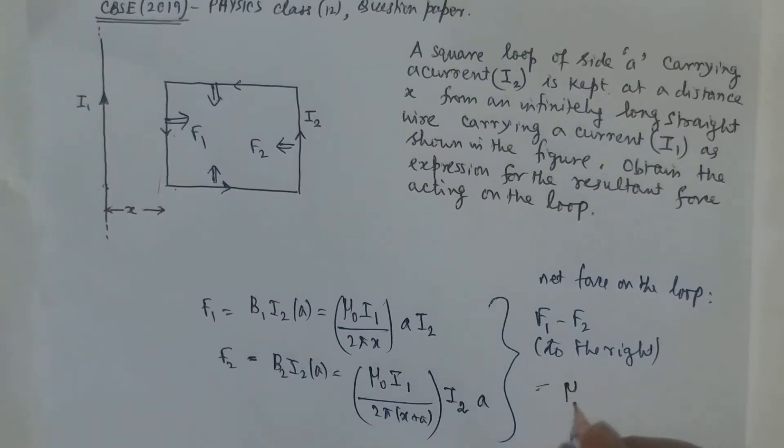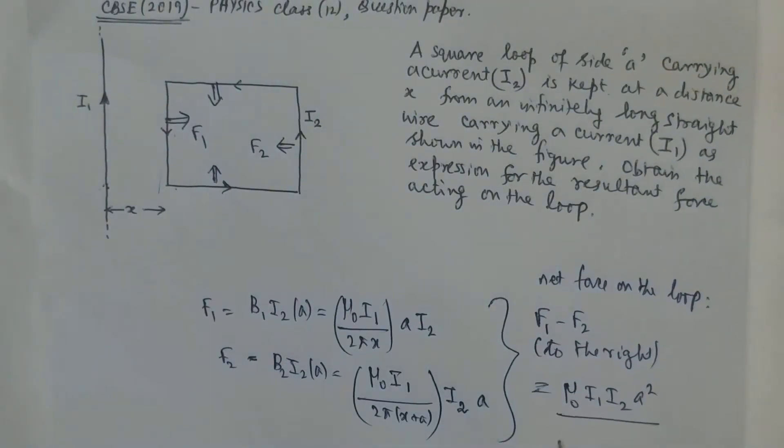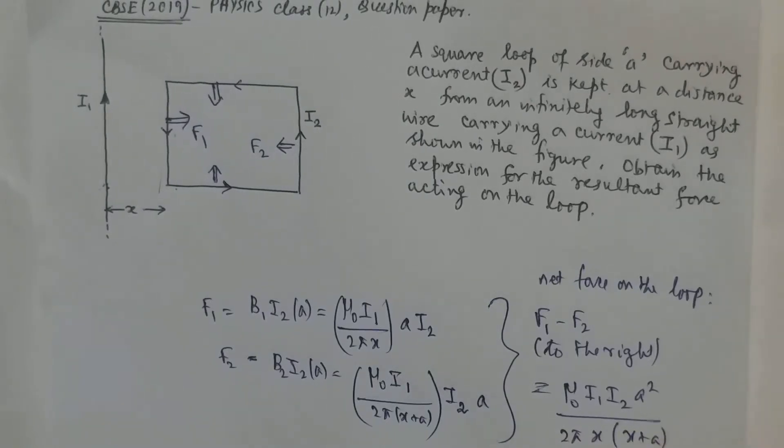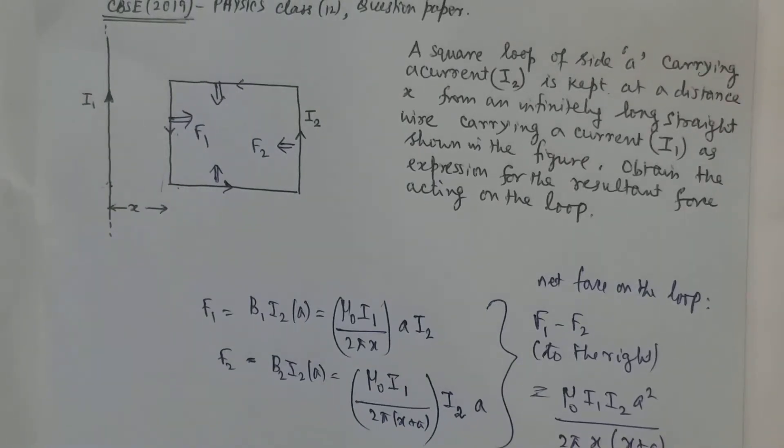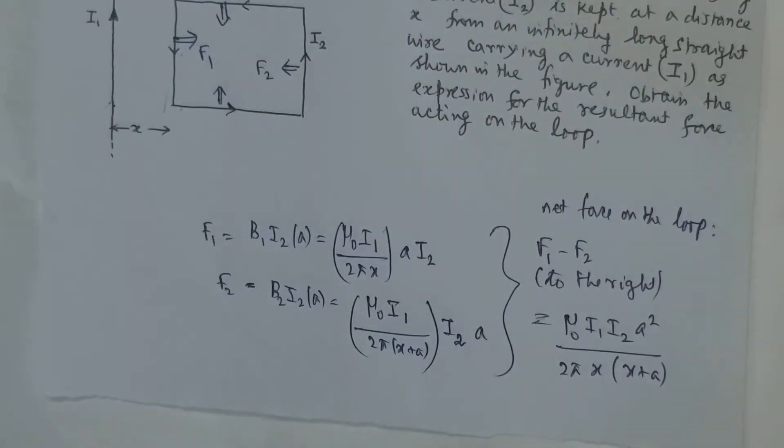Just put the value: you have μ₀I1I2A² divided by 2πx(x plus A). This will be the net force acting on the square loop. Just see the result and verify it.